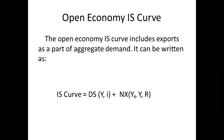The open economy IS curve includes exports as a part of aggregate demand. It can be written as: IS equals DS(Y, i) plus NX(YF, Y, R), where DS is domestic spending as a function of income Y and interest rate i, and NX is net exports as a function of foreign income YF, domestic income Y, and real exchange rate R.